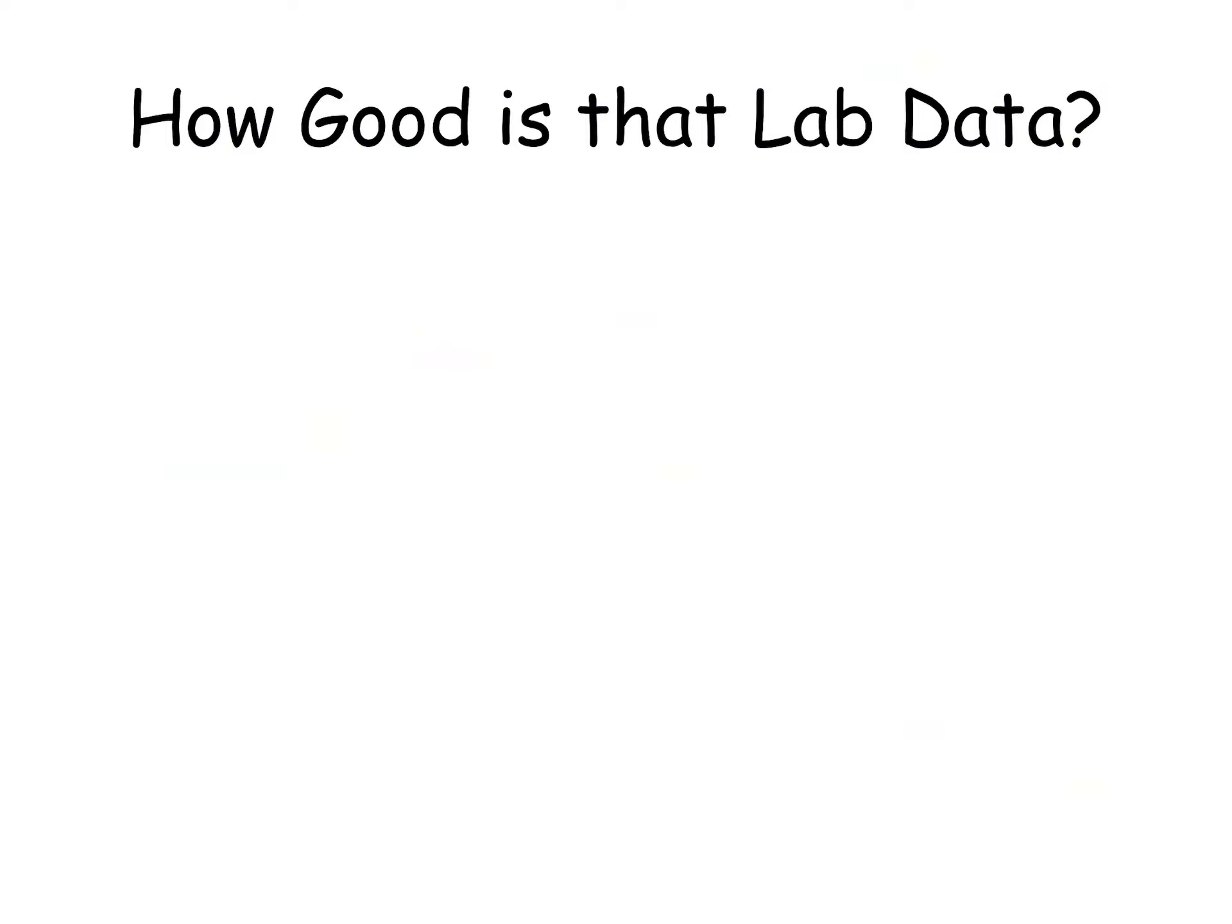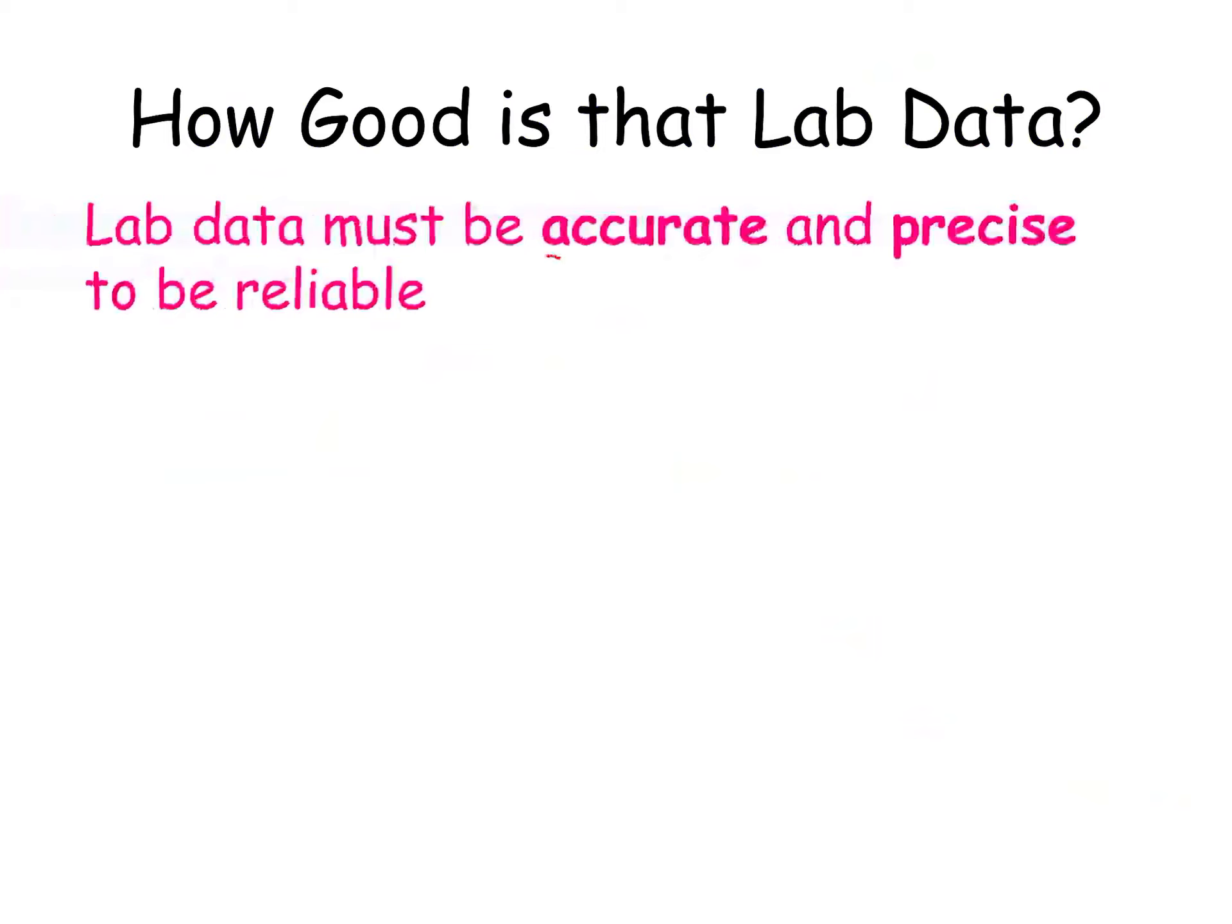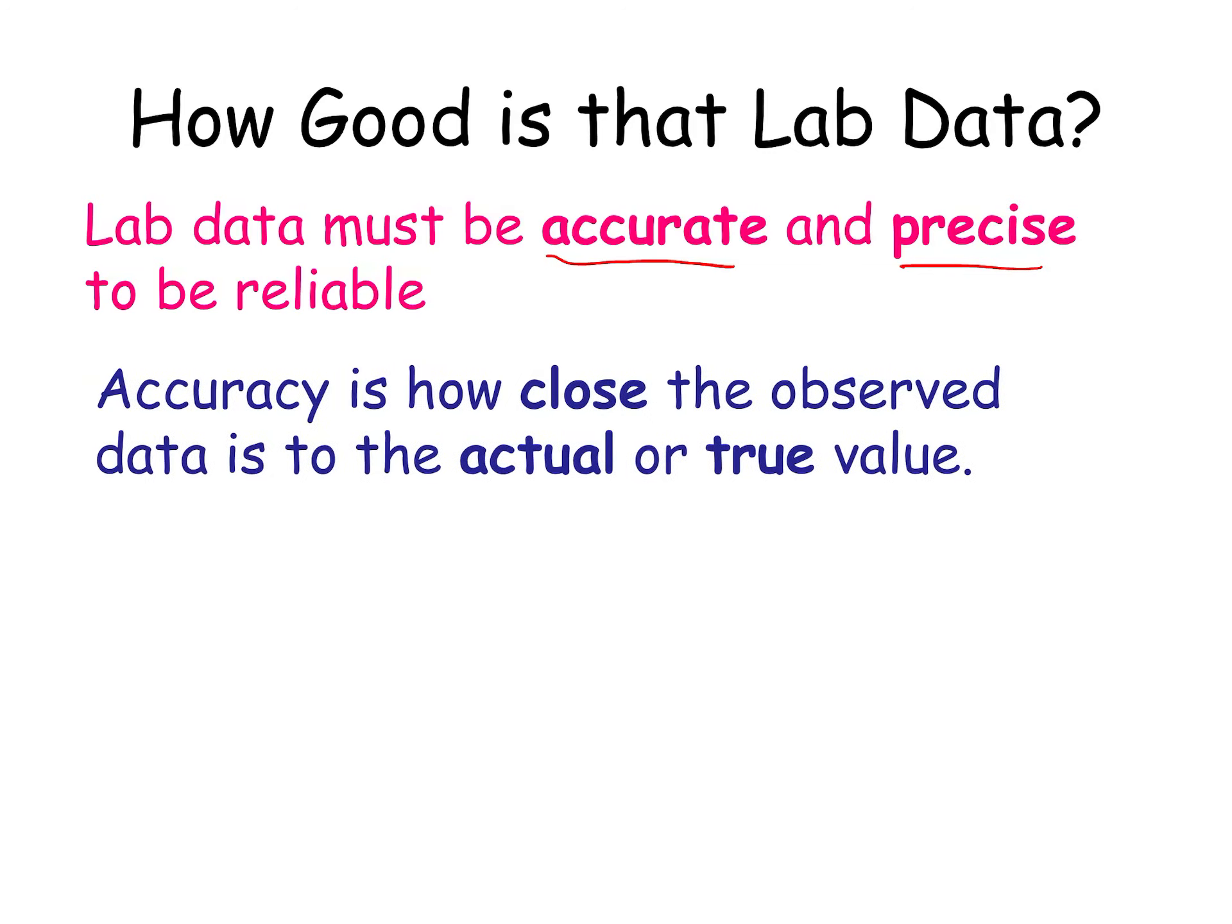So let's say we're taking lab data. And the question is, how good is it? It's not the best English, but we'll go with it. So in order to have, quote unquote, good lab data, it has to be both accurate and precise. Here's the problem. A lot of times people use those two words interchangeably, and they're not. So to define accuracy, it means how close you are to the true value.